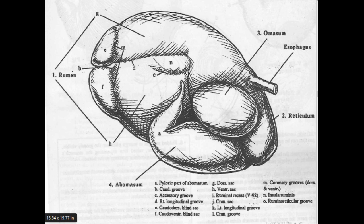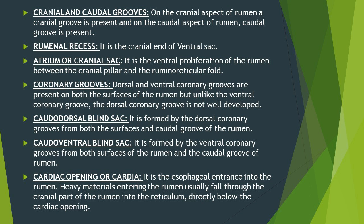Another groove present near the longitudinal groove is called the accessory groove, present on both surfaces of the rumen. On the lateral surface, the accessory groove starts from the longitudinal groove and moves dorsally. On the visceral surface, the accessory groove starts from the right longitudinal groove, moves dorsally, and meets again with the right longitudinal groove, forming an arc dorsal to the longitudinal groove. The area formed between the right longitudinal groove and right accessory groove is known as insular ruminous.